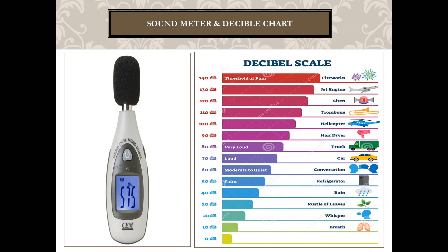In the last lesson we learned that the unit of frequency is hertz. The unit of sound is the decibel, written as small 'd' capital 'B'. Different objects produce different decibel levels — for example, fireworks produce 140 decibels.